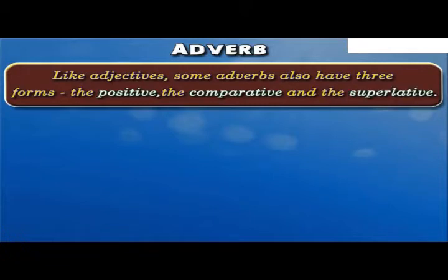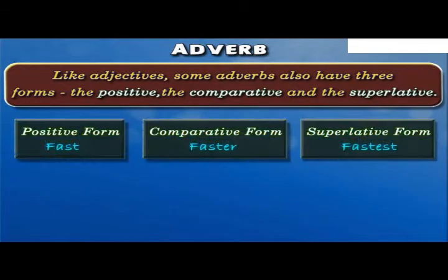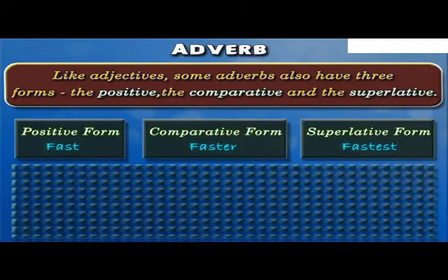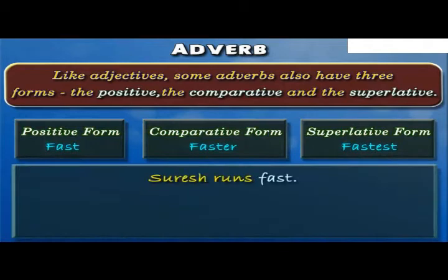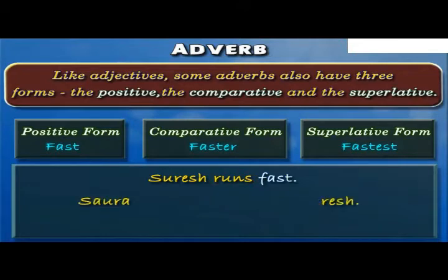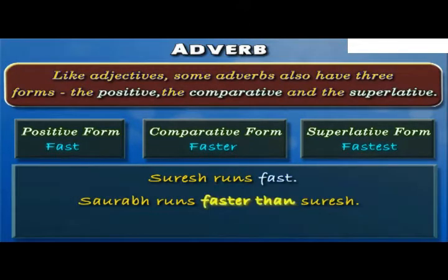Let us understand it by taking the example of the word fast. Suresh runs fast. Here, fast is an adverb in the positive form which describes the verb runs. Saurabh runs faster than Suresh. Here, faster is an adverb in the comparative form since a comparison is being done between two individuals.